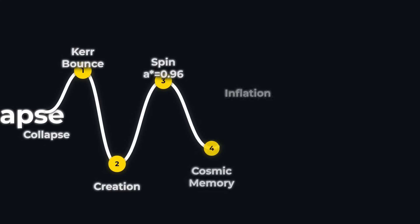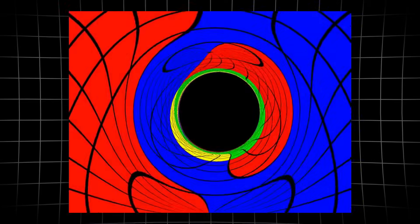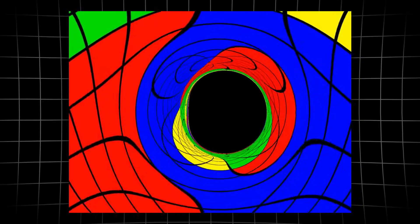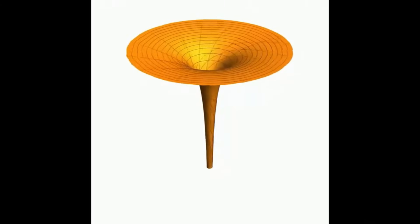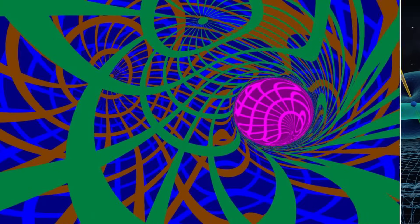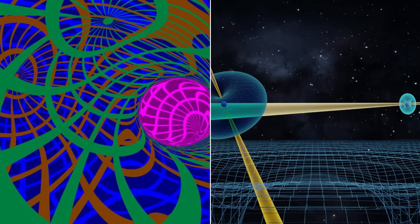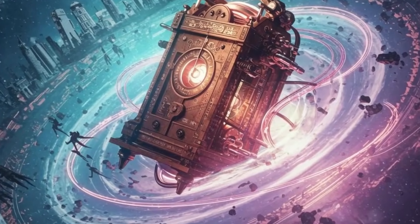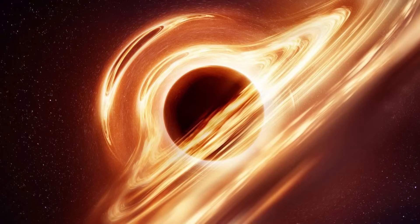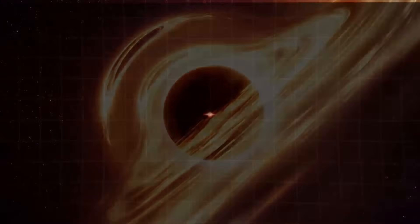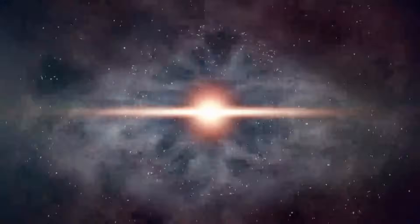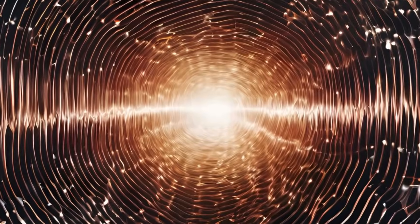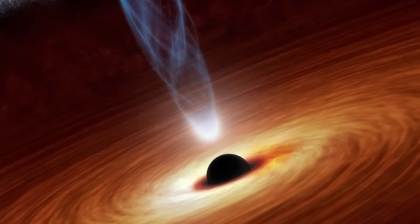That is the theoretical bridge between collapse and creation. The Kerr black hole's spin adds another twist, literally. As it rotates, it drags the very fabric of space-time around with it, an effect called frame dragging. Near the ring, this twisting gets so intense that time and space start to swap roles. In the most extreme scenarios, the ring singularity could act like a portal launching a burst of energy and matter into a brand new, expanding universe. That is the bounce, a rebound from collapse, not an ending, but a beginning.